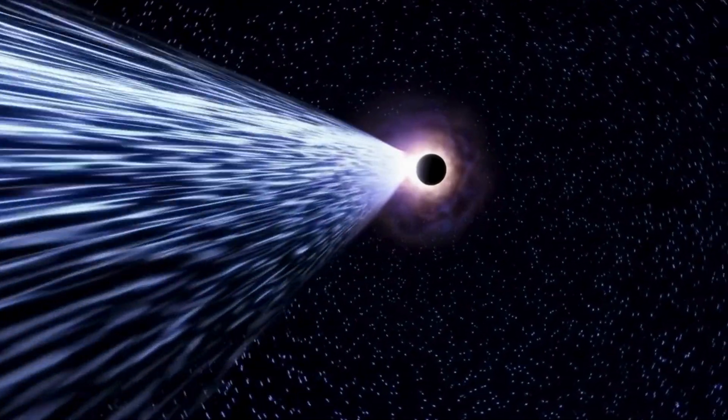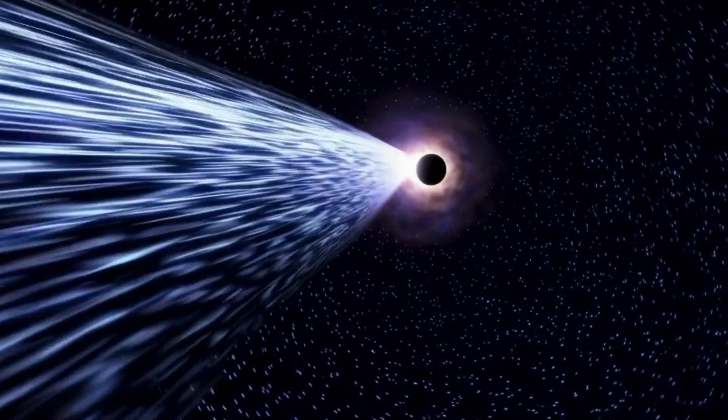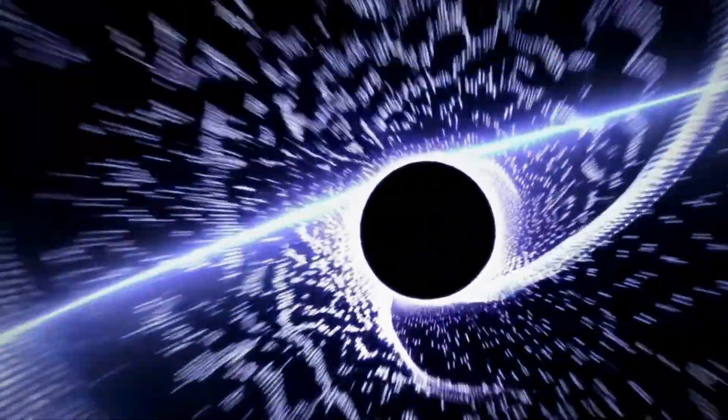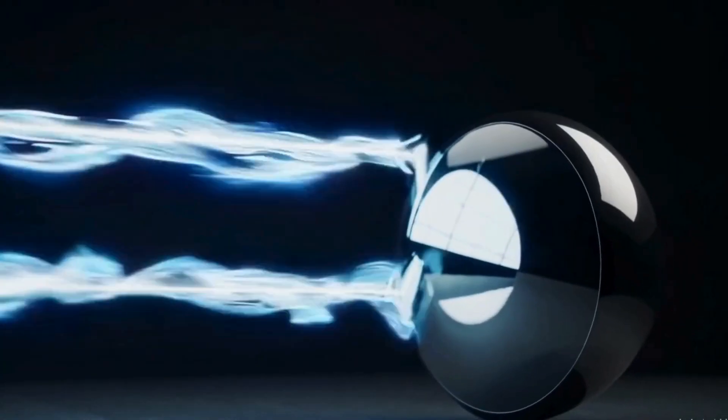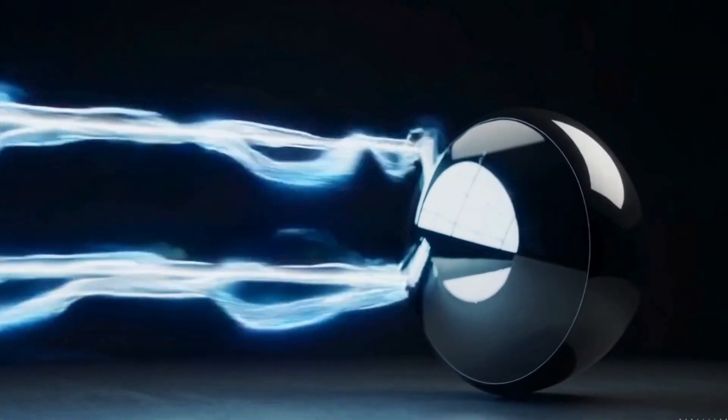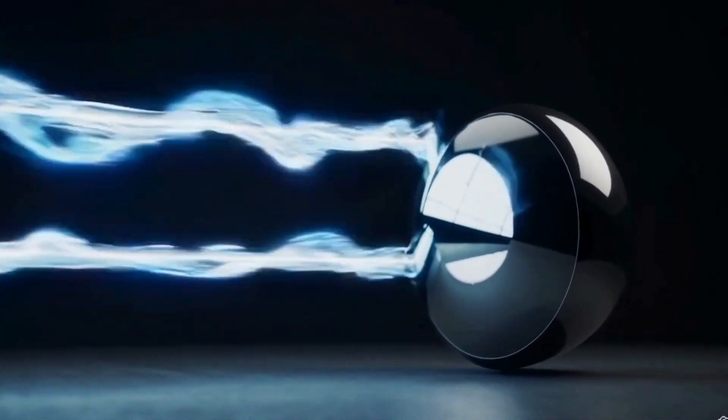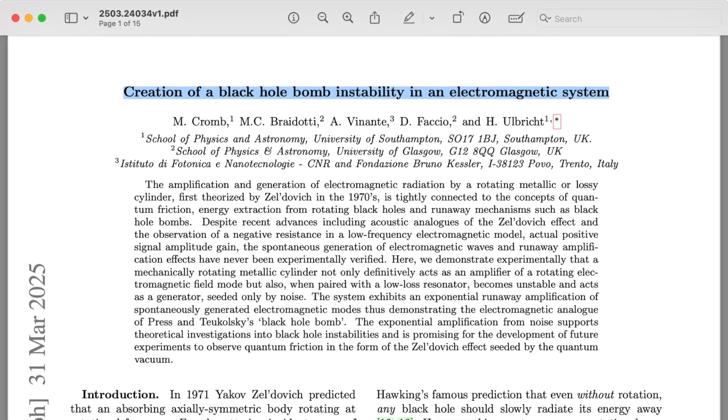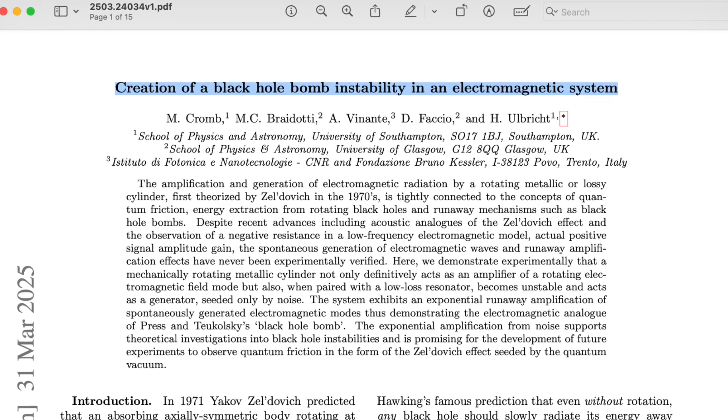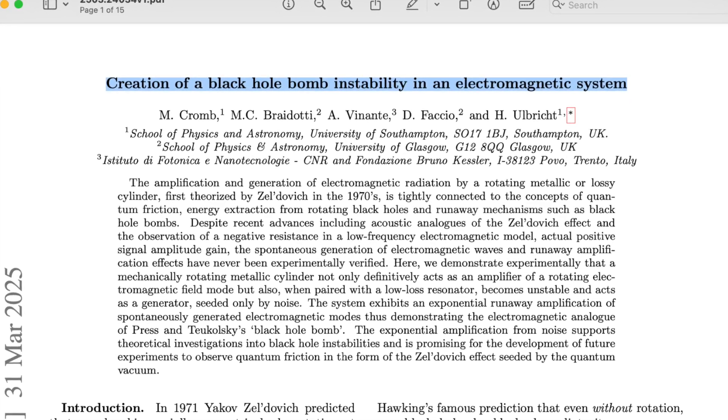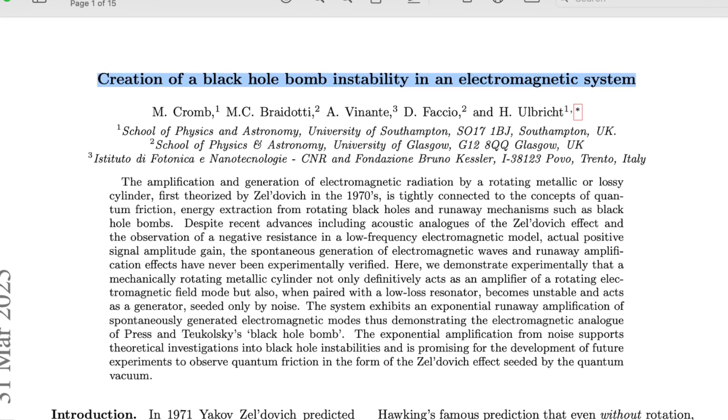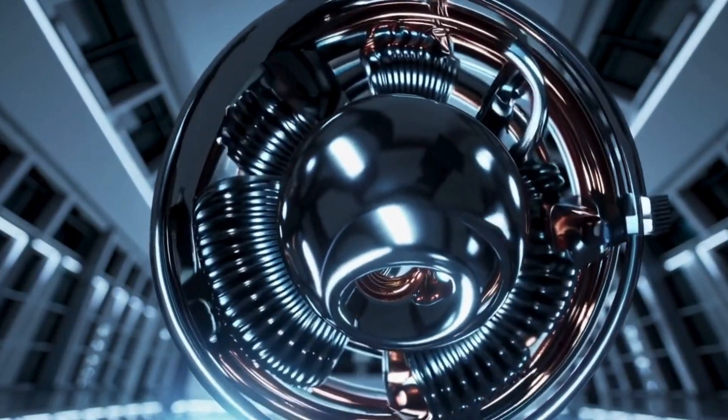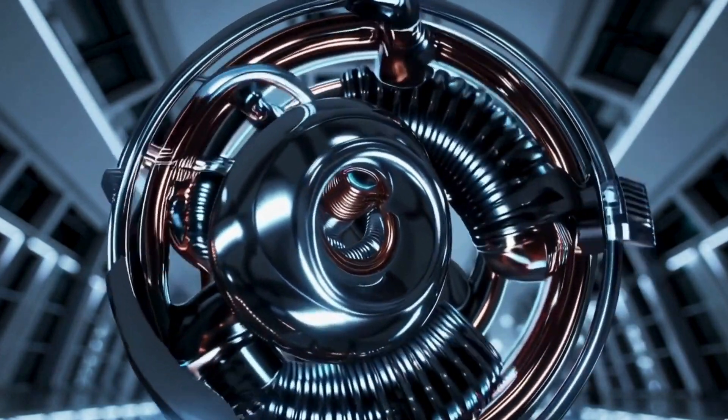The idea of a black hole bomb was first proposed in 1972 by American physicist William H. Press and Saul Tucholsky from Caltech. For more than half a century, it remained purely theoretical. Until now, in April 2025, a team of physicists from the University of Southampton, England, announced in a peer-reviewed journal that they had successfully recreated this phenomenon in a laboratory. An idea once confined to equations and thought experiments had, at last, become an observable reality.